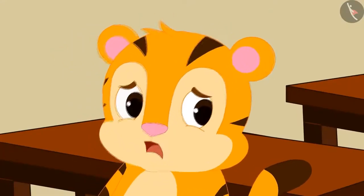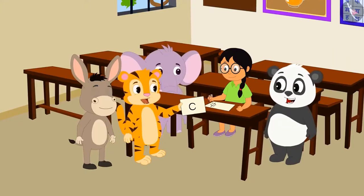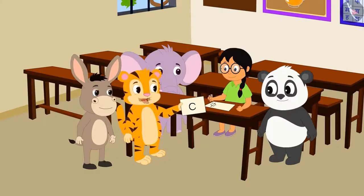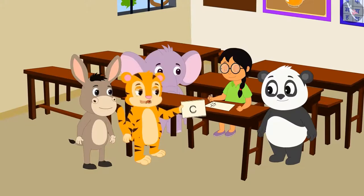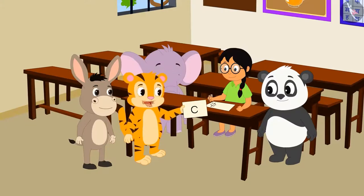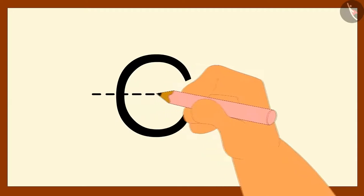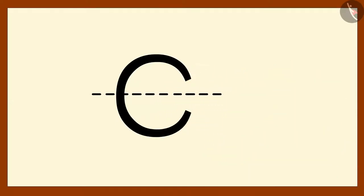Shere Khan draws a C on a paper and shouts: 'If your magic is better than my magic, then can you divide this C into two similar parts with the help of a dotted line?' Minoo smiled and drew a dotted line on Shere Khan's C.